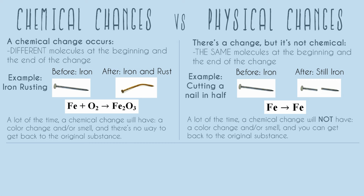Physical changes will be things you'll touch on, but most of chemistry is spent on chemical changes. Just as some little signifiers — this isn't a hundred percent, but it's a good guideline — a lot of the time a physical change will not have a color change and/or a smell, and you can get back to the original substance.